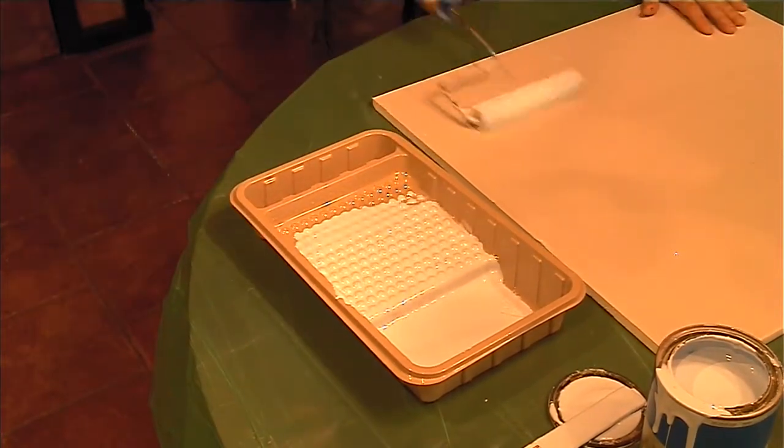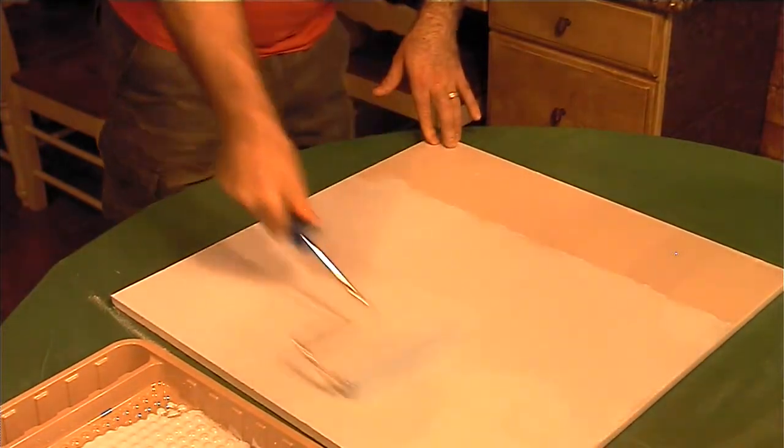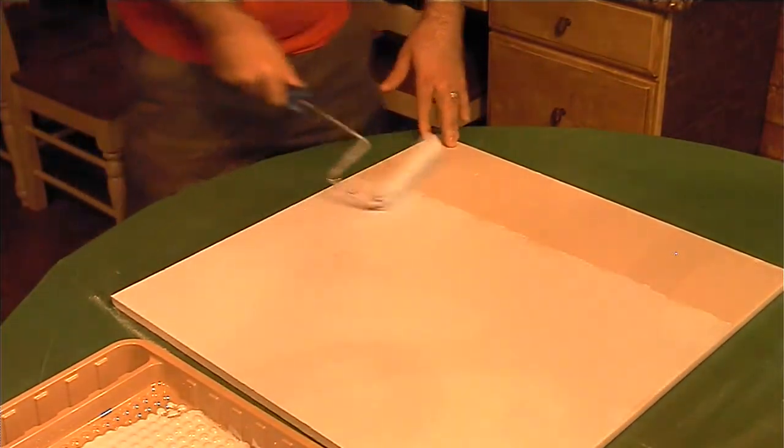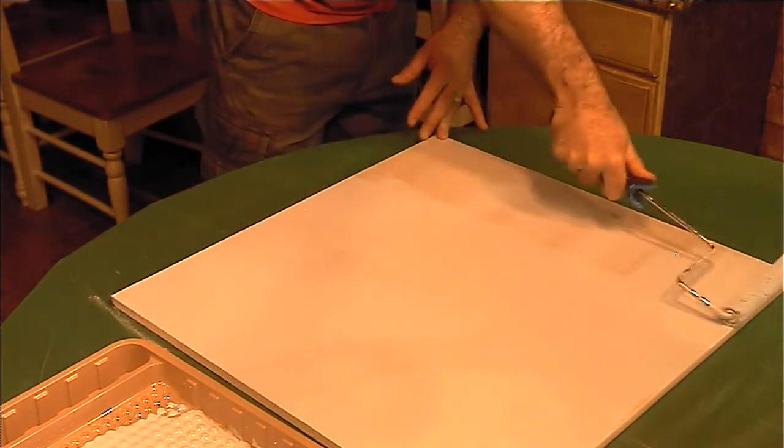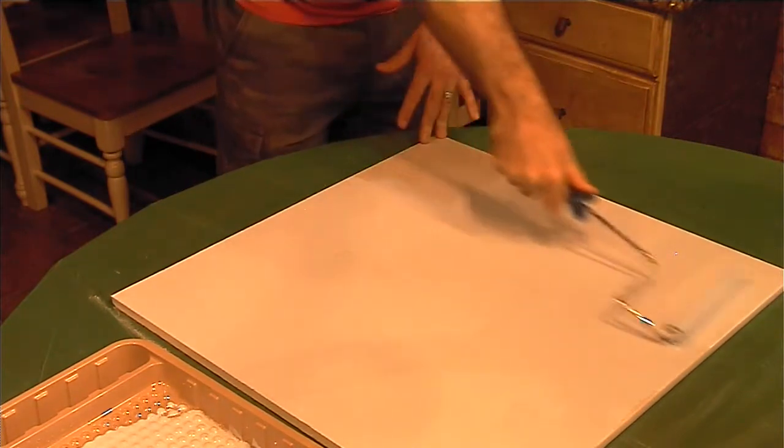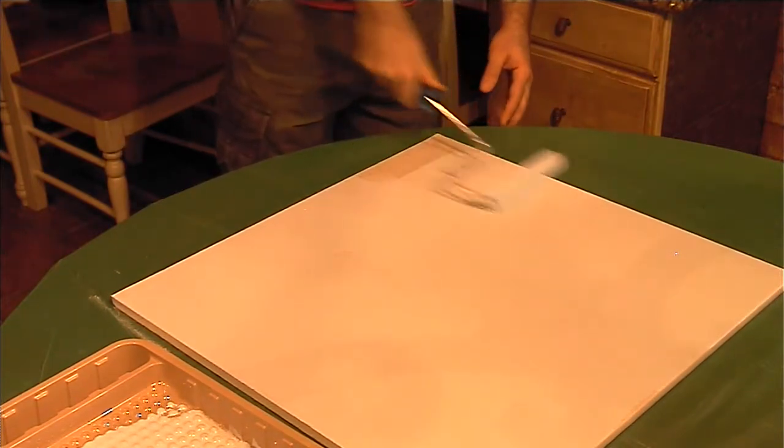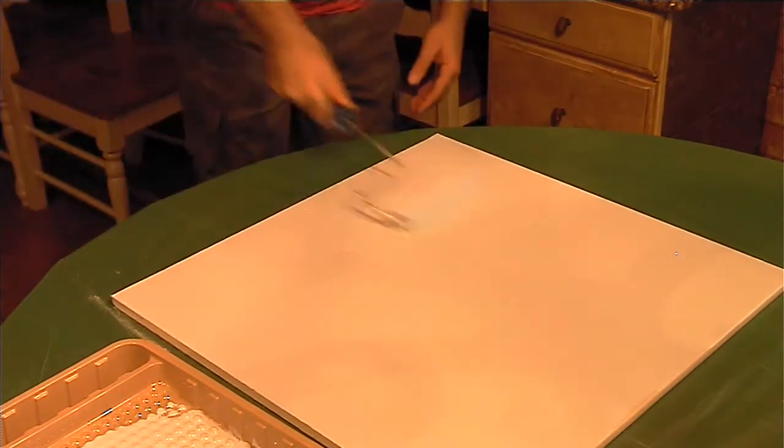And here I go, base color. You usually want to go in the same direction too because if you cross you'll kind of see it. It depends on the sheen though. Like if you get a flat it doesn't matter but this is like a satin so you got to be careful. Satin, anything above, you want to watch which way you go with the roller.